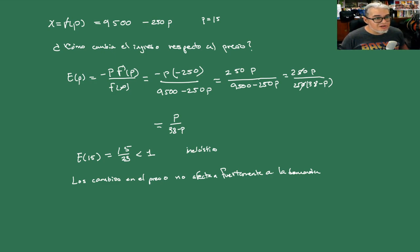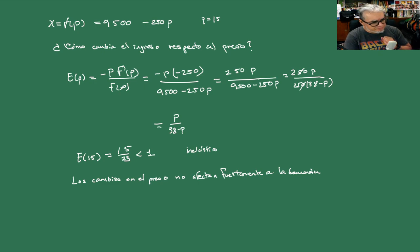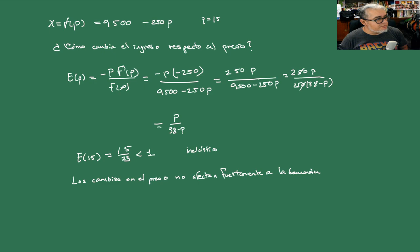Hoy le vamos a parar aquí y la próxima sesión empezamos ya a hablar sobre optimización: vamos a hablar sobre qué tienen que ver las derivadas con propiedades de monotonía, qué significa cuando la derivada se anula. Nos vamos a tomar un par de sesiones hablando de eso y luego ya terminaríamos con cálculos de integrales. Nos vemos en la siguiente sesión.